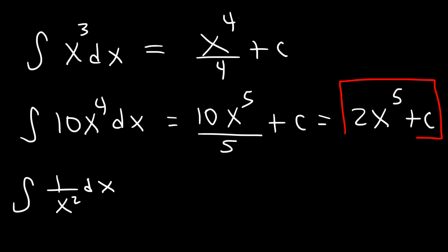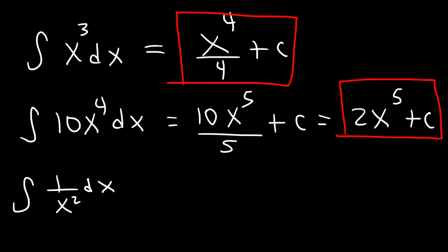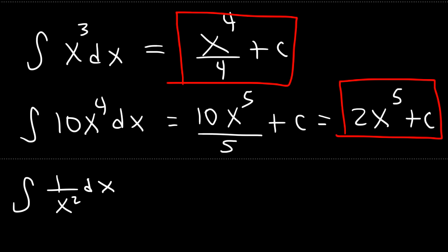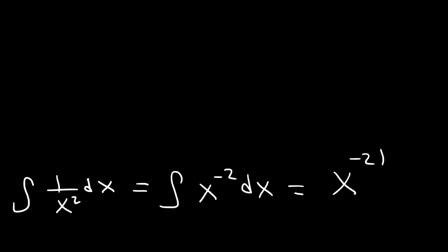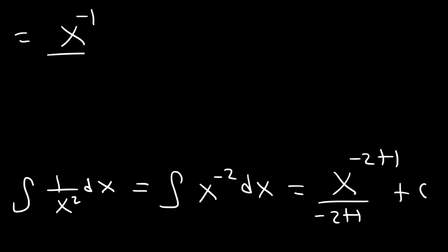Now what about 1 over x squared? Before you integrate it, you need to rewrite it. We can rewrite it as x raised to the negative 2 dx, then use the power rule. So it's x raised to negative 2 plus 1, divided by negative 2 plus 1, plus c. Negative 2 plus 1 is negative 1, and we can rewrite the final answer as negative 1 over x plus c.